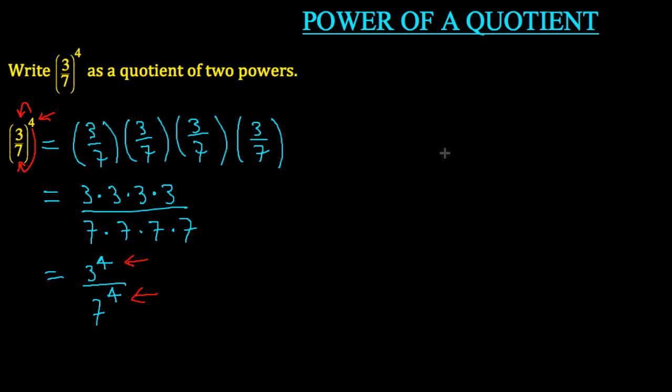And so we have this rule. The rule looks like this: A over B raised to the exponent N is simply A to the exponent N divided by B to the exponent N. A pretty simple, straightforward rule, and it reminds us of the power of a product rule in our previous video.